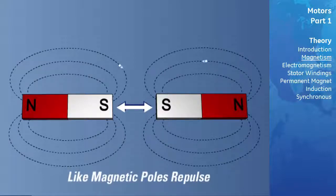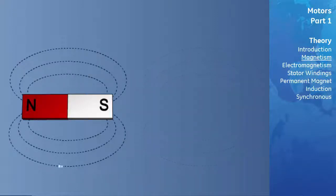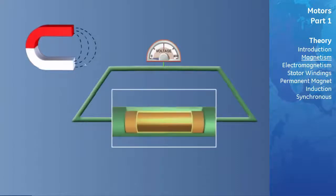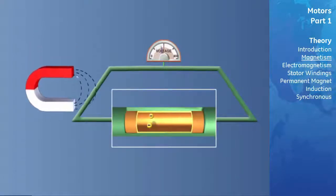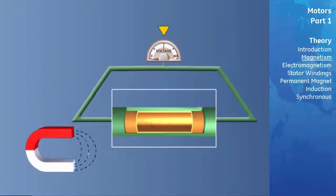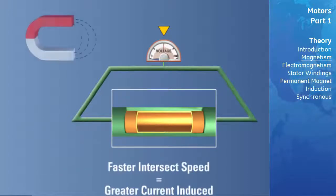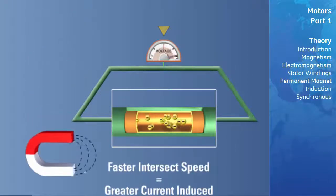This attraction and repulsion plays an important role in the operation of an electric motor. When magnetic lines of flux cut through a conductor, a voltage, and hence a current, is induced in the conductor. The magnitude of the induced voltage and current is proportional to the speed at which the conductor is cut by the magnetic field and the strength of the field.